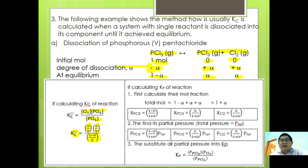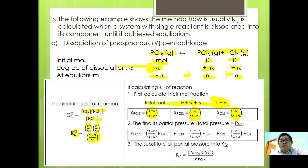However, if we were to express Kp, things are a little more complicated. First, calculate the mole fraction. The total mole is 1 minus alpha plus alpha plus alpha, giving 1 plus alpha. So the mole fraction of PCl5 is (1 minus alpha) over (1 plus alpha), mole fraction of PCl3 is alpha over (1 plus alpha), and mole fraction of Cl2 is also alpha over (1 plus alpha). We then find the partial pressure of each species and substitute those partial pressures into the Kp expression: Kp equals partial pressure of PCl3 times Cl2 divided by partial pressure of PCl5.